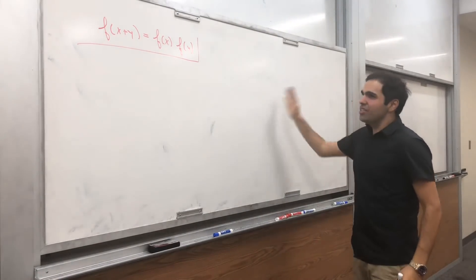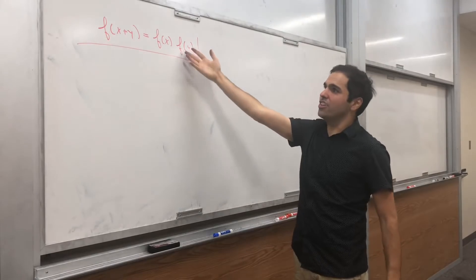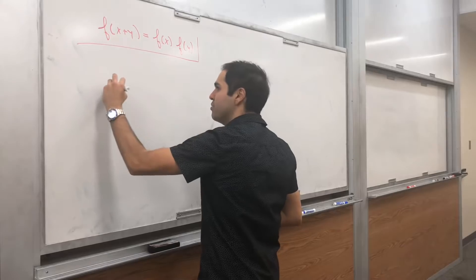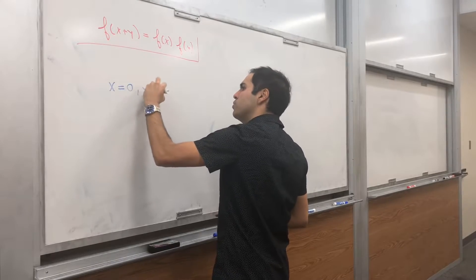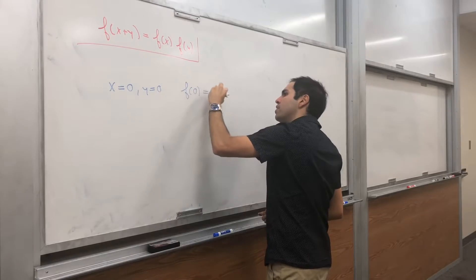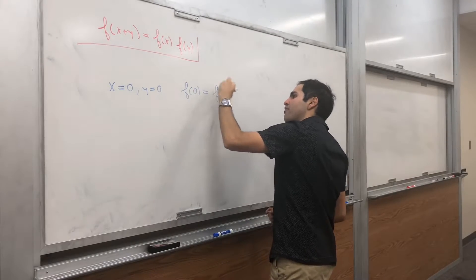And so first of all in this function let's figure out what f of 0 is. So if x equals to 0 and y equals to 0 in this equation you get f of 0 equals to f of 0 times f of 0.